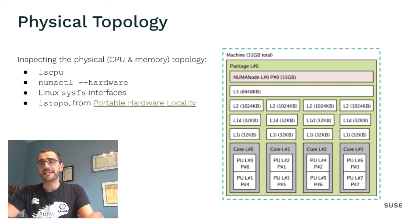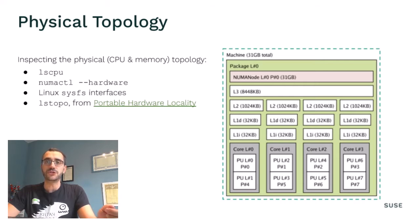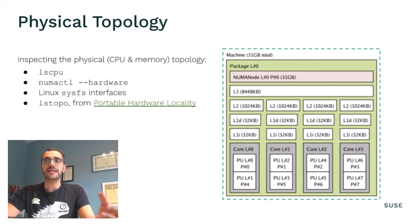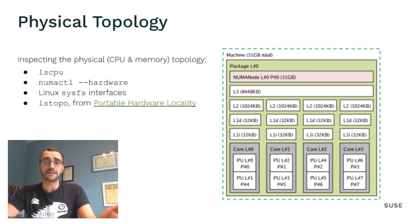When a graphical representation is preferable, a tool called lstopo from the hwloc project can be used to produce diagrams like the one in the slide. This provides a very immediate and clear look at the system's components, their relationships, and their interconnections — which is, in fact, by definition, the system topology.